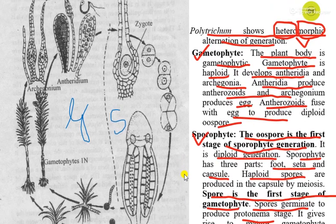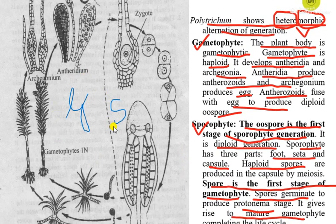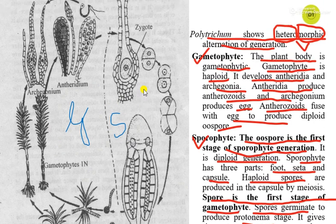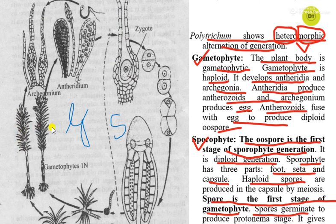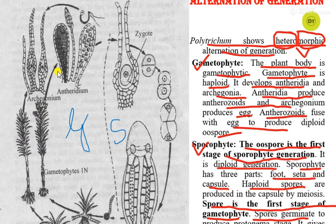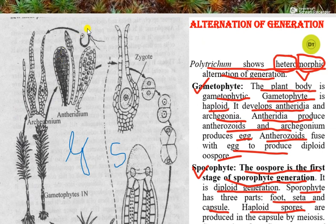We can see in this diagram: G indicates the gametophytic phase and S indicates the sporophytic phase. Since Polytrichum is dioecious, we get separate male and female plants. The female plant produces archegonium and the male plant produces antheridium. Antheridium will produce sperms or antherozoids, and the archegonium will produce egg. Antherozoids and egg will fertilize to produce a diploid zygote.